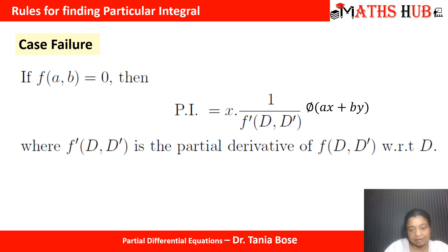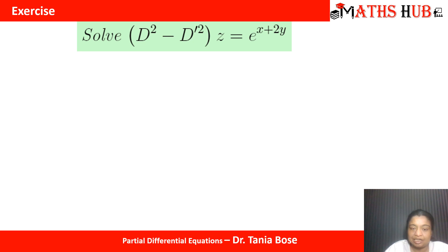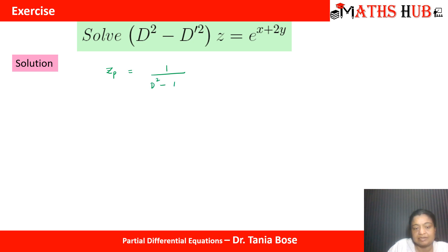This rule is very simple, and questions we have done in previous videos can also be solved with this method — you will get the same answers. For the first question: solve D² minus D'² into z equals e^(x+2y). We have done this question before by rule number 1. I will not calculate the complementary function; we will calculate the particular solution. So zp equals 1 upon (D² minus D'²) into e^(x+2y). The right hand side is a function phi(ax+by), so replace D with 1 and D' with 2.